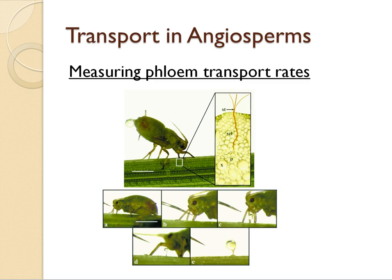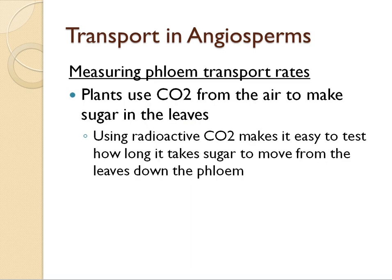To measure the rate at which sugar was moving through the phloem, someone decided that radioactivity might be the best way to do it. Plants use carbon dioxide from the air to make sugar, so if you put a plant in an area with radioactive carbon dioxide, it's going to make radioactive sugar. You'll be able to see how long it takes the sugar to be made, to move into the phloem to wherever you put the stylet down the phloem. By comparing a location high up on the stem and lower down on the stem, and timing both, you'd be able to figure out the rate of flow in the phloem.